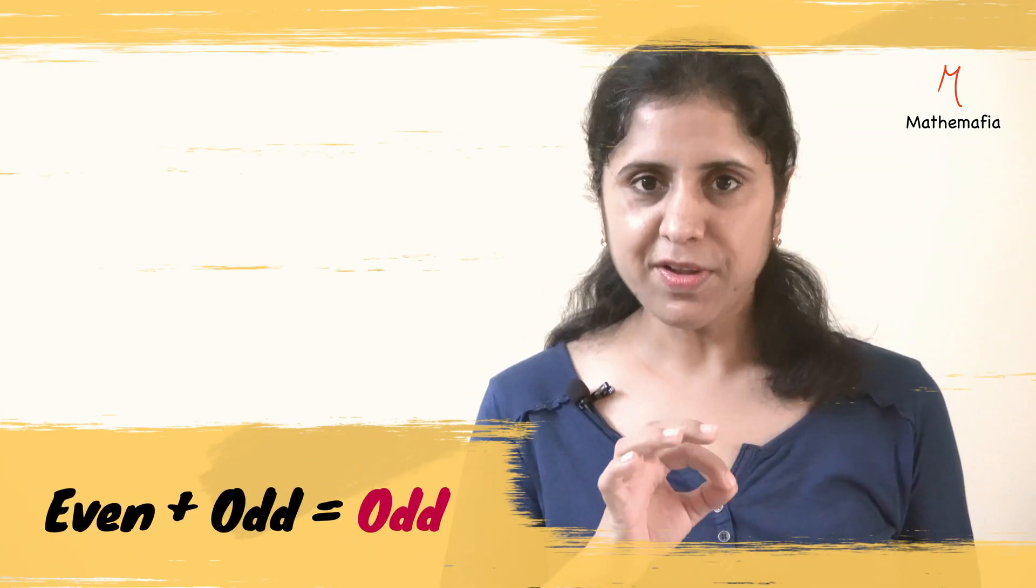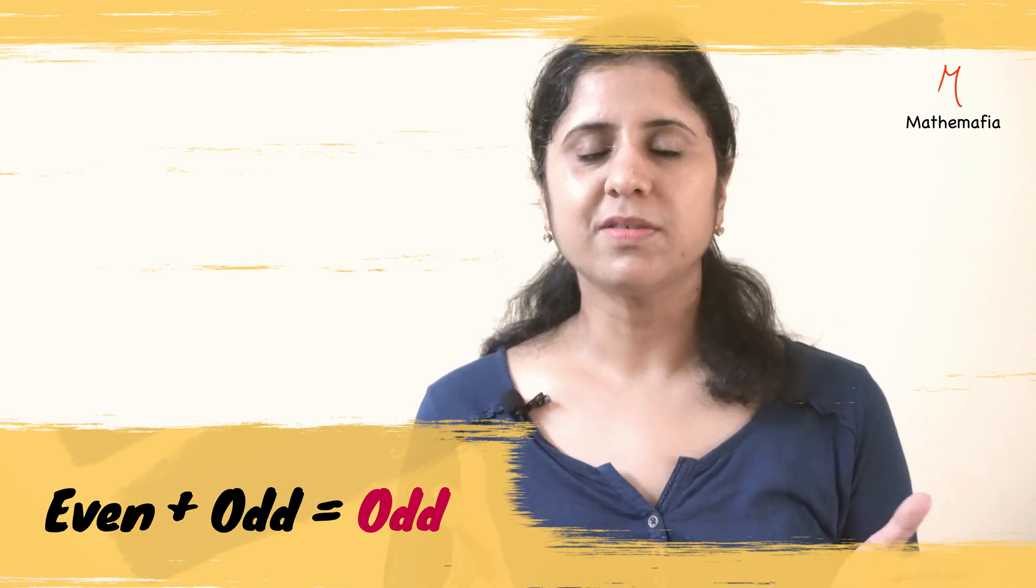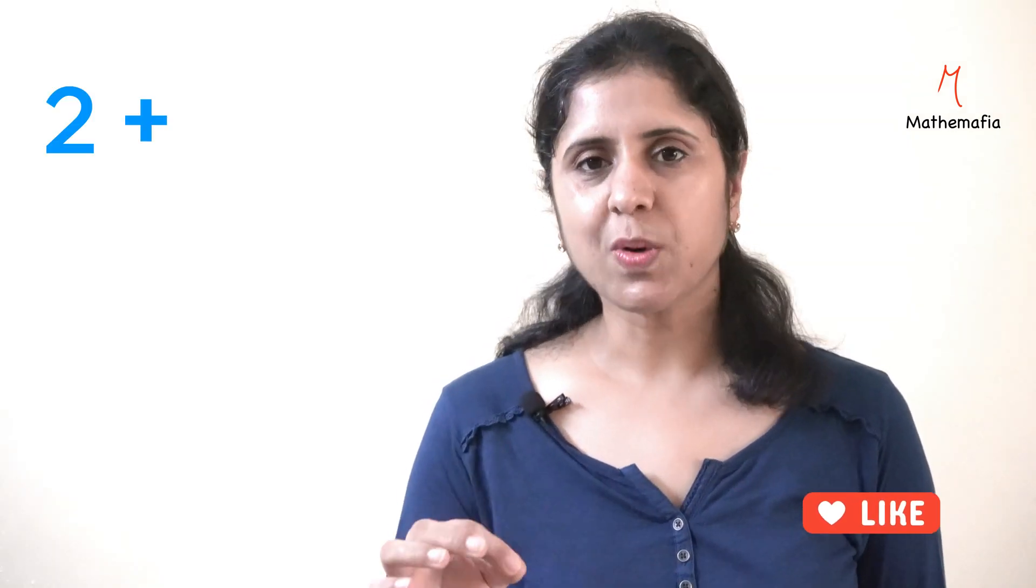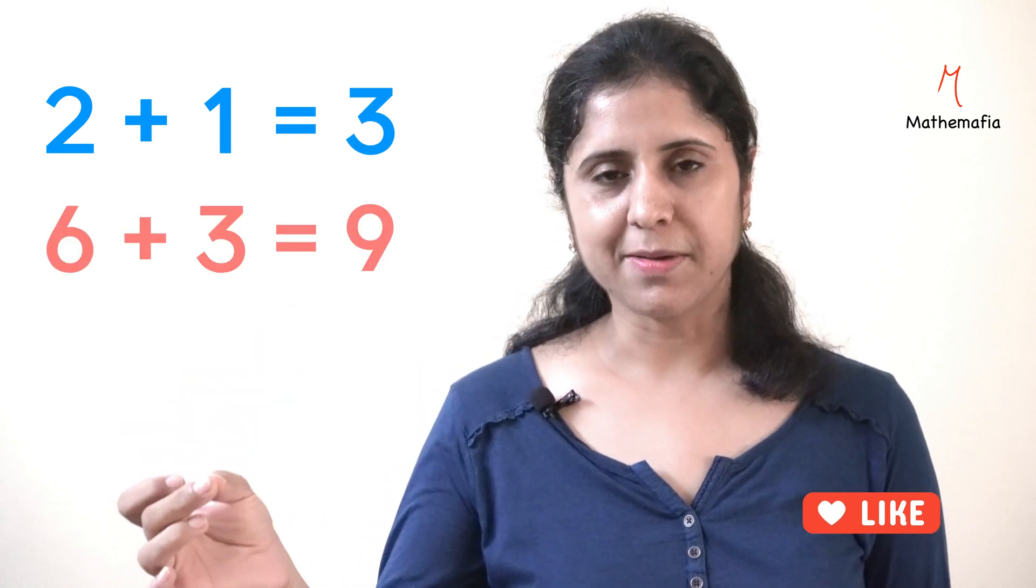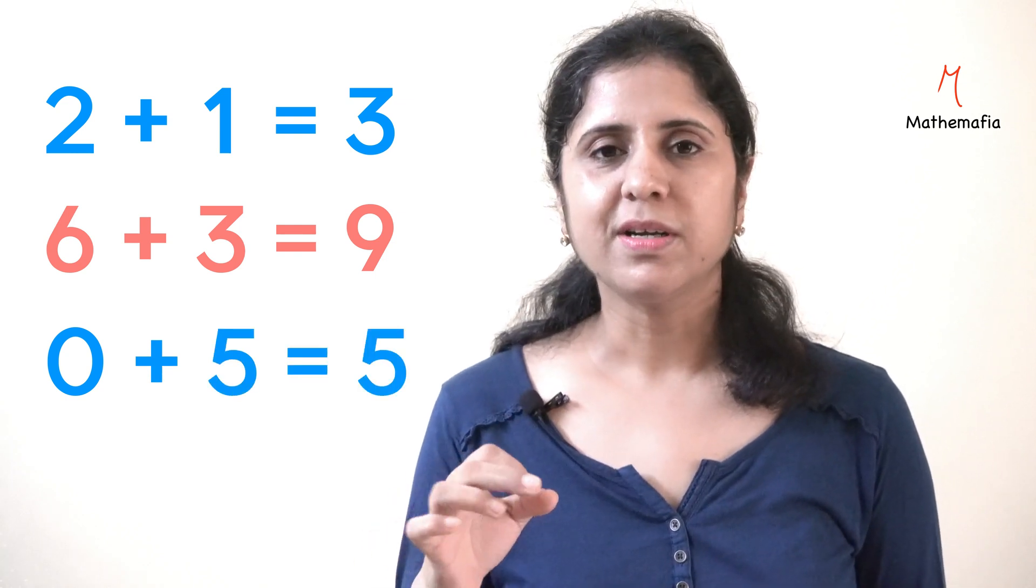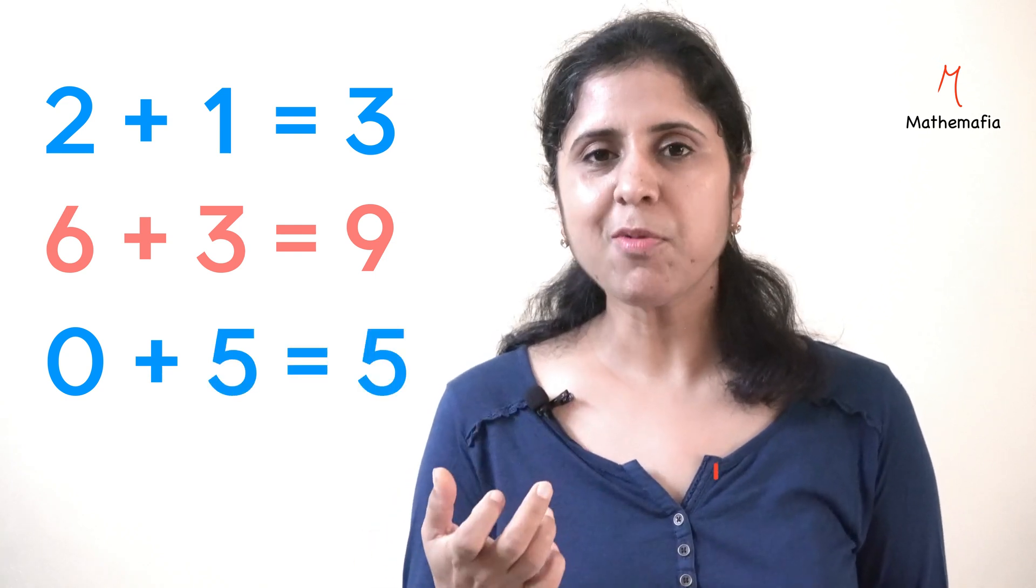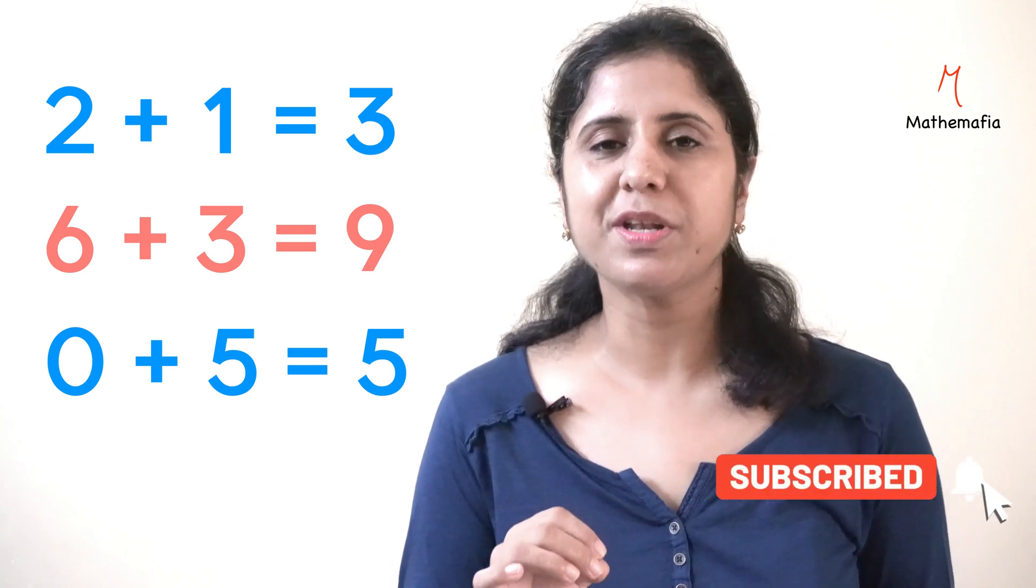The third property of even numbers is, if we add an even number to an odd number, the result is going to be odd. For example, 2 plus 1 is 3, 6 plus 3 is 9. Similarly, if we add 0 to another odd number, what will be the result? The same odd number. So, 0 satisfies the third property of even numbers as well.